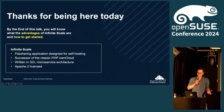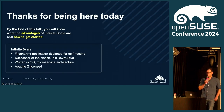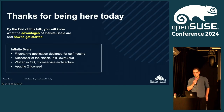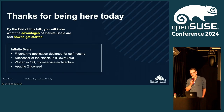For those who don't know, Infinite Scale is a file sharing application which is designed for self-hosting. It is the successor of the old PHP-based OnCloud, which also shares some history with NextCloud, and it is a complete rewrite in Go with a new microservice architecture, also Apache 2 licensed — so feel free to use.